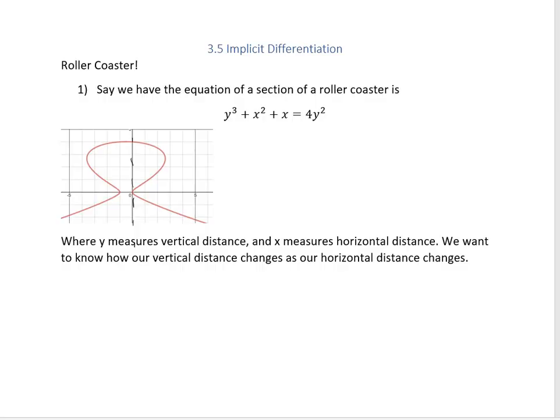In section 3.5 we're going to be looking at implicit differentiation. We're going to be using this when we have equations or relationships where y isn't clearly defined in terms of x. Usually we're used to having y equals something with a bunch of x's in it, but now we're going to have our y's mixed in with our x's. This is going to allow us to take the derivative of relationships that aren't functions. For example, we have the equation of a section of a roller coaster given by y³ + x² + x = 4y². Just looking at the picture, we can tell right away that this is not a function because it fails the vertical line test.